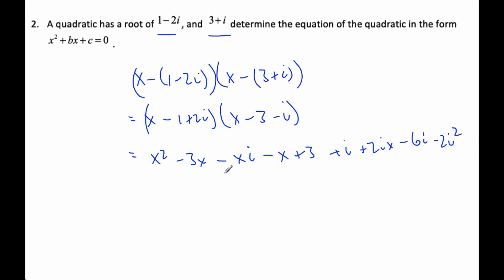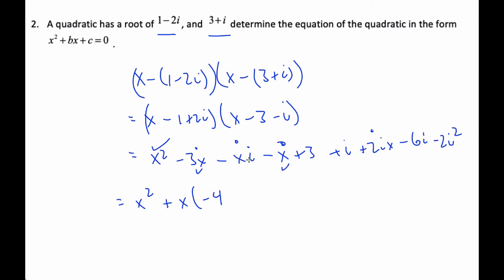And now it's just a matter of collecting like terms. There is only one x squared, so that one is accounted for. Then collecting the x terms: negative 3x minus x plus 2ix will give minus 4x plus ix, and the negative i plus 2i gives a plus i, with the x pulled out.